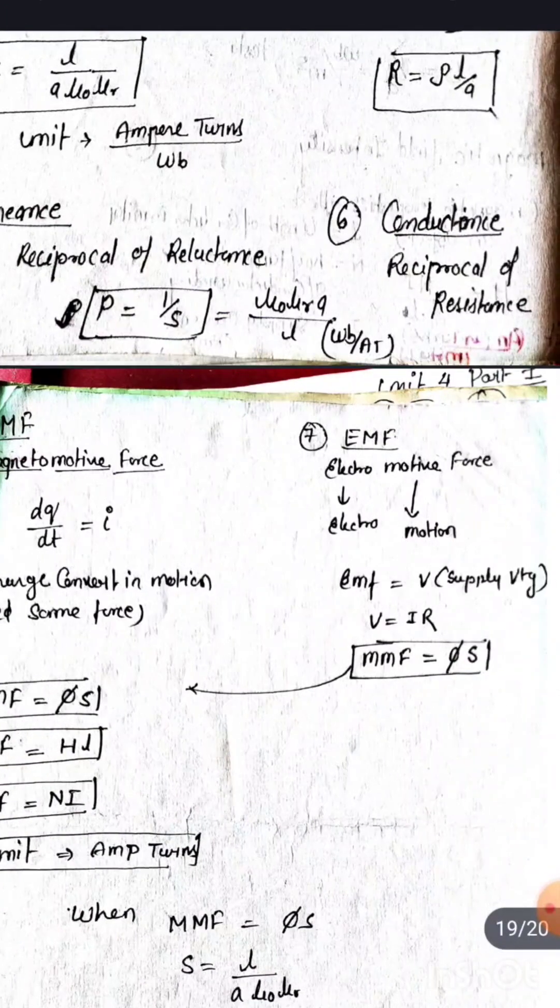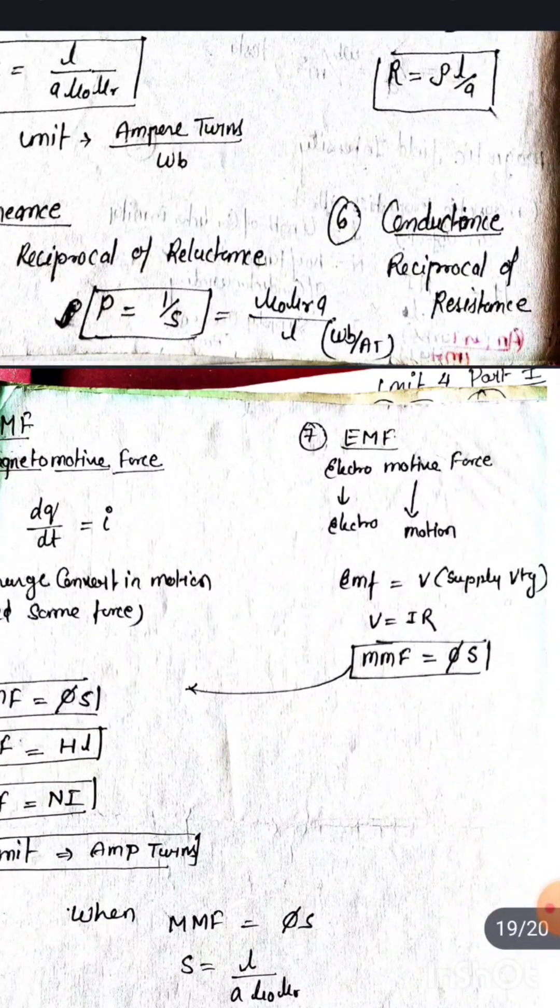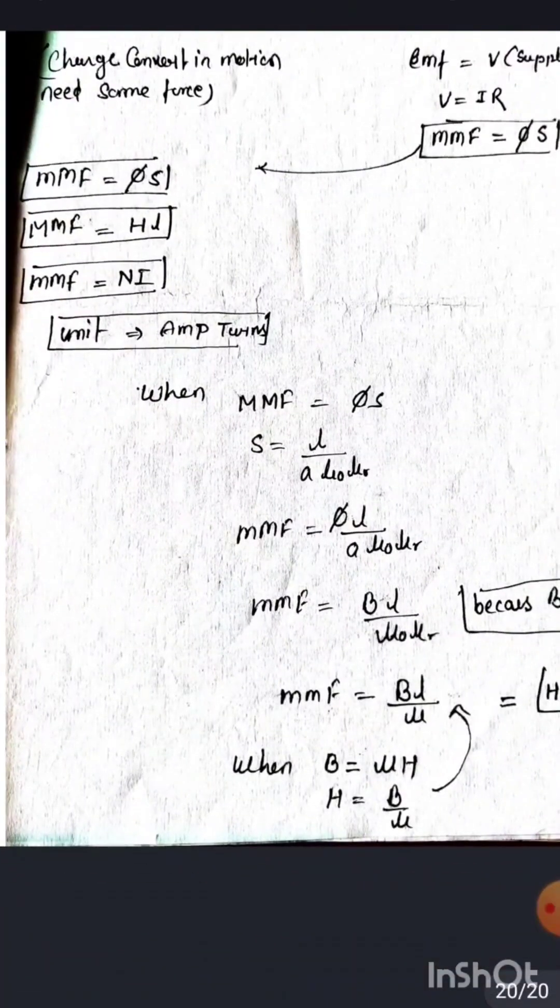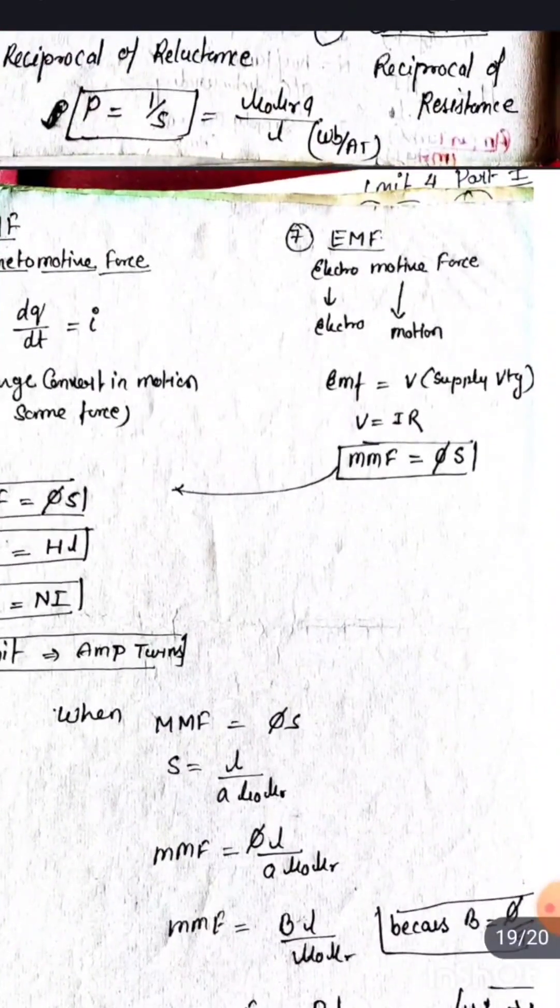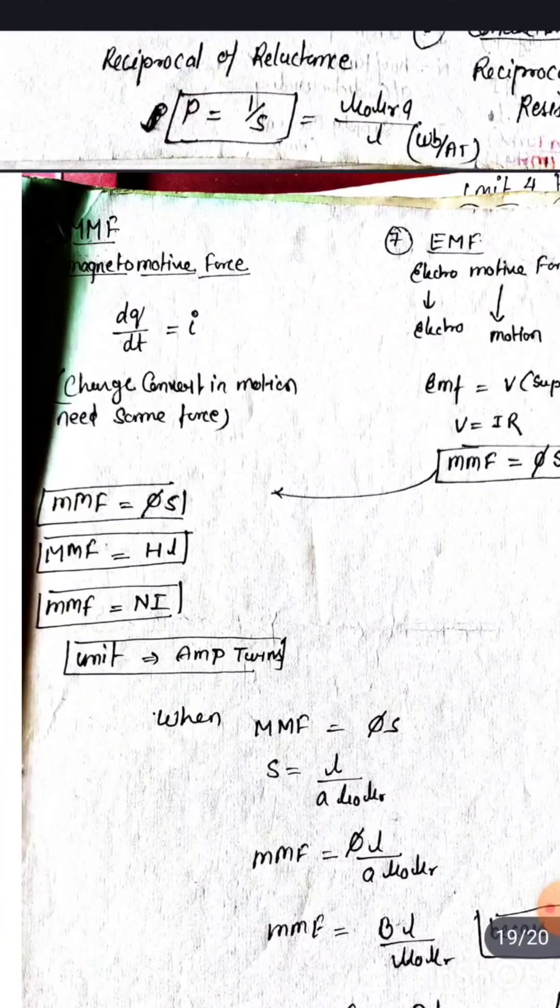MMF equals phi times S in terms of reluctance, or H times L in terms of intensity.